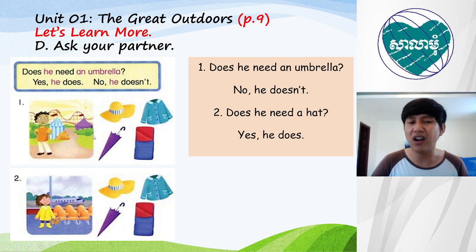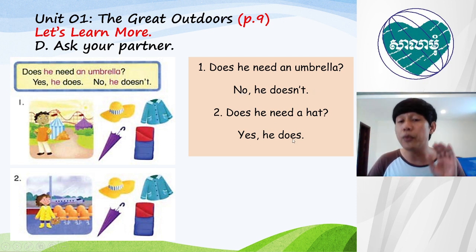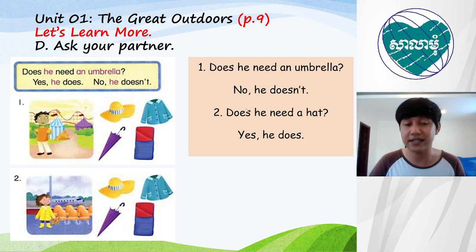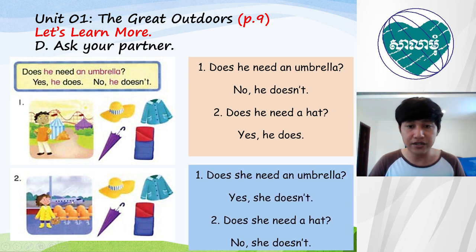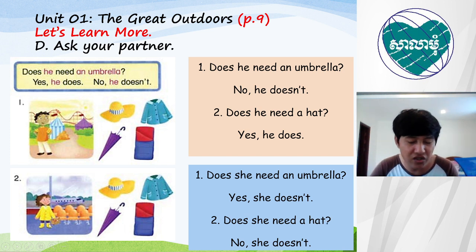Look at picture number two. Look at her and the situation. The first question: does she need an umbrella? Look at her — the sky is black, right? It's going to rain, so she needs an umbrella. Yes, she does. And question two: does she need a hat? No, she doesn't. So this is the yes/no question.